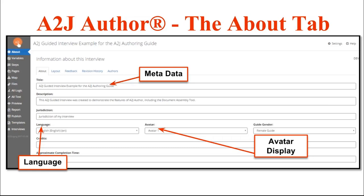Under this section, you can also add — under layout — information like your logo, your legal aid organization or court logo. You can change the ending graphic; by default it is a courthouse, but you can make it any logo you'd like. You can allow the end user to provide feedback by enabling it on the Feedback tab. You can include revision history and add information about yourself as the author. All of this metadata will not be displayed to the end user — it's only information for other authors. The title and any graphics or logos you attach will be displayed.